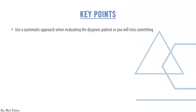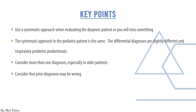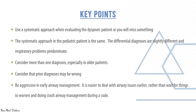Key points: use a systematic approach when evaluating the dyspneic patient or you will miss something. The systematic approach in the pediatric patient is the same, though the differential diagnoses are slightly different and respiratory problems predominate. Consider more than one diagnosis, especially in older patients, and consider that a prior diagnosis may be wrong. Be aggressive in early airway management — it is easier to deal with airway issues early rather than waiting for things to worsen and performing crash airway management.